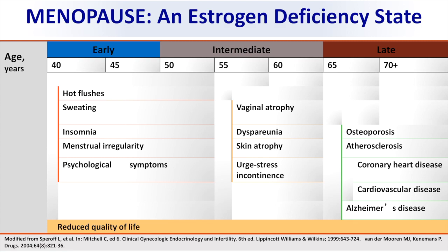Here is the whole spectrum of signs and symptoms of menopause. For early menopause, in a patient in her 40s to early 50s, manifestations include hot flashes, sweating, insomnia, menstrual irregularities, and psychological symptoms. For the intermediate stage, in her mid-50s to early 60s, manifestations include vaginal atrophy, dyspareunia, skin atrophy, and incontinence. For the late menopausal stage, in her late 60s to early 70s, manifestations include osteoporosis, atherosclerosis, and Alzheimer's disease.